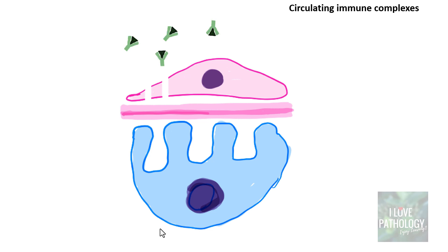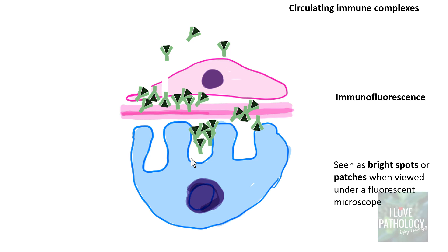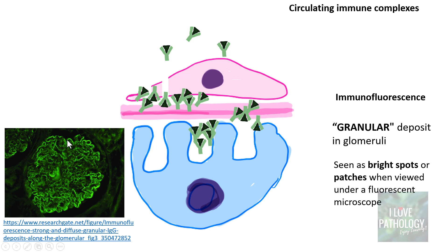Antigen-antibody complexes formed in circulation eventually get trapped due to physicochemical properties and hemodynamic factors. They can be trapped beneath the endothelium, on the glomerular basement membrane, or beneath the epithelium. Under immunofluorescence microscopy, these trapped immune complexes appear as bright patches — not linear like in anti-GBM disease — and are called granular deposits. This is seen for example in lupus nephritis, where bright spots or patches appear all along the glomerular loop.